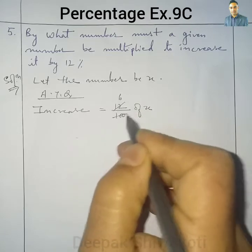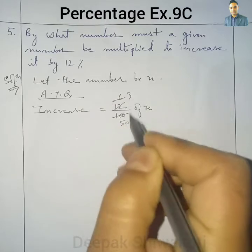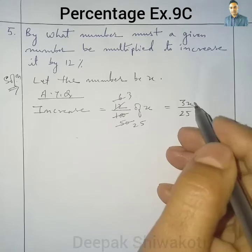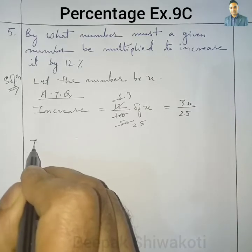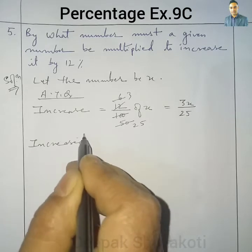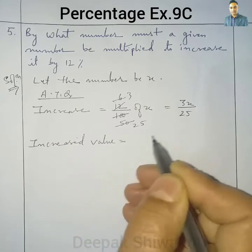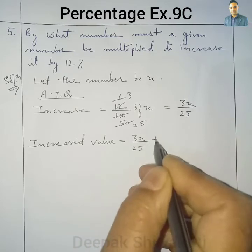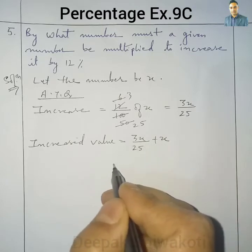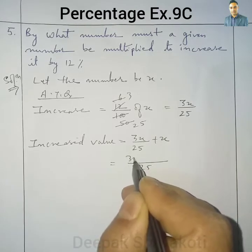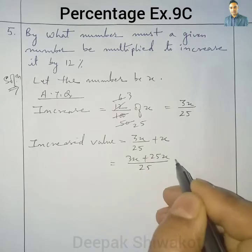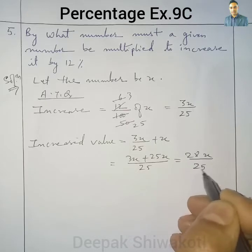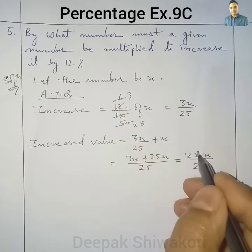Simplifying 12% of x: we can cancel to get 6x over 50, which reduces to 3x over 25. So the increase equals 3x by 25. Now the total increased value will be equal to 3x by 25 plus x. Taking 25 as the LCM, we get 3x plus 25x in the numerator, giving us 28x over 25.